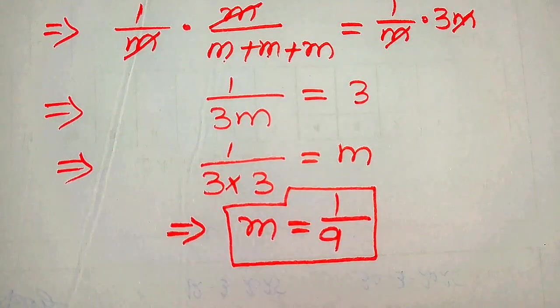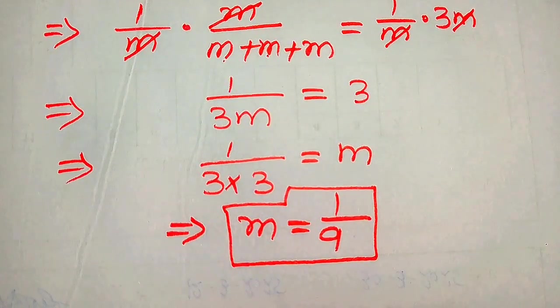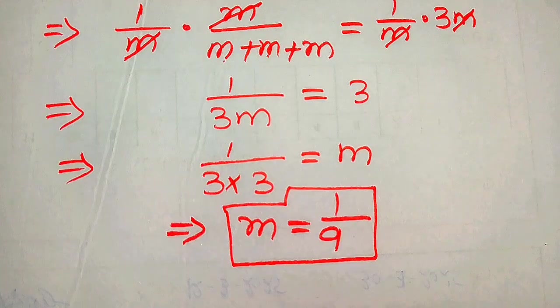From both methods we get the same value, m equals one over nine, which is our final answer. Thank you so much for watching this video — please subscribe to my channel for more exciting videos.